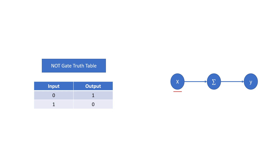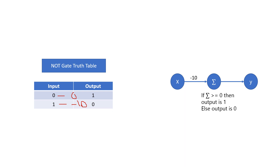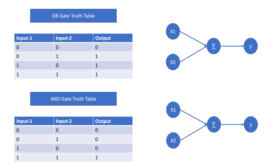For the NOT gate, we have one input and one output. Assume the weight as minus 10. Due to the minus 10 weight, the summation function is going to be zero for input zero, and for input one it is going to be minus 10. If summation is greater than or equal to zero, the output is one, and for all other conditions — that is minus 10 — the output is zero.